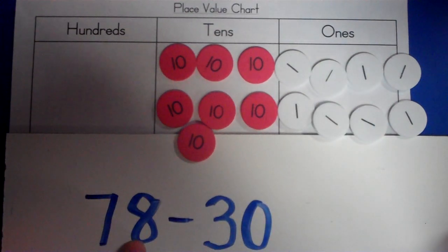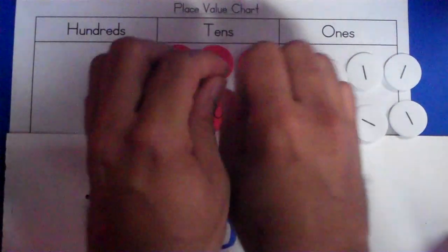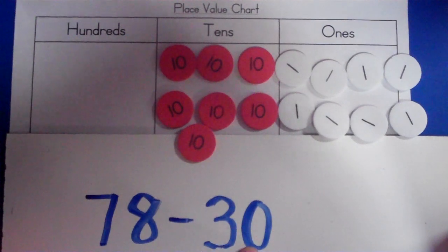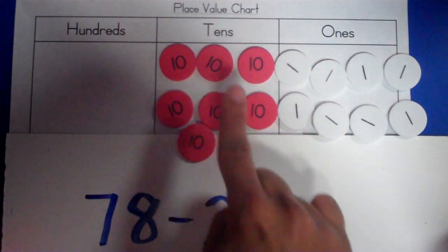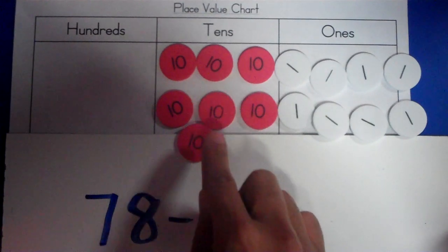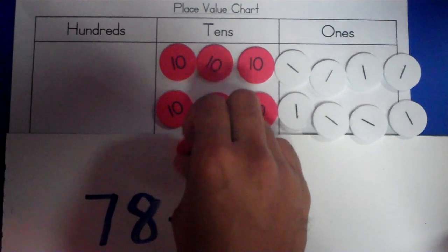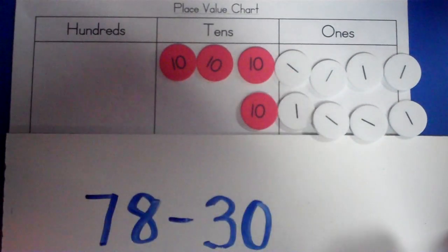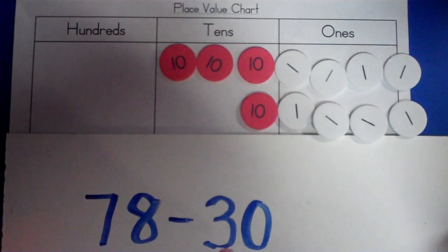So, I have seven tens and eight ones. That's what I am starting out with. Now, I am subtracting. That means I am taking away. It means I am taking away three tens and zero ones. So, all I am going to do is look here. Do I have three tens to take away? Yes, I do. So, I am going to take away three tens. One ten. Two tens. Three tens. I have taken away three tens and zero ones.